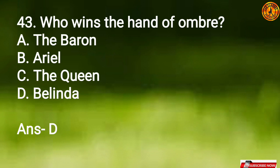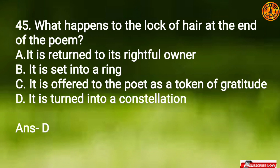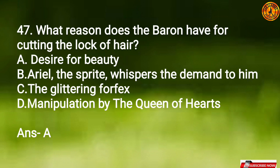Question 42: Where is the party held? Option A, Hampton Court Palace. Question 43: Who wins the hand of ombre? Option D, Belinda. Question 44: Who arms the Baron with a pair of scissors? Option B, Clarissa. Question 45: What happens to the lock of hair at the end of the poem? Option D, it is turned into a constellation. Question 46: What does Thalestris think the Baron will do with the lock? Option C, both of the above.